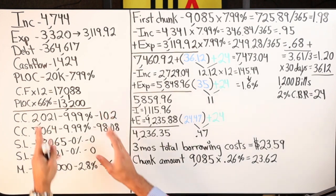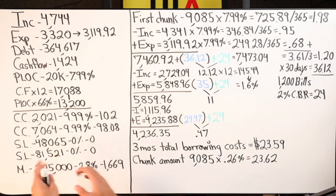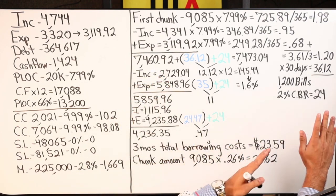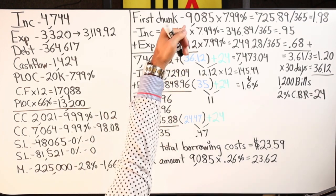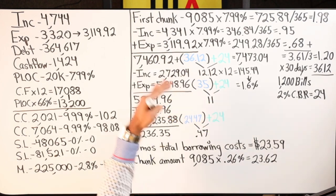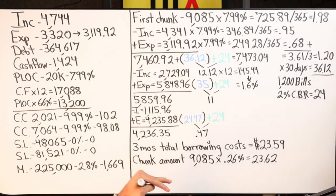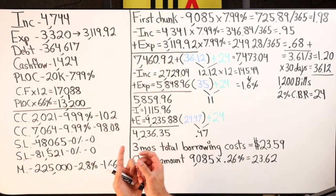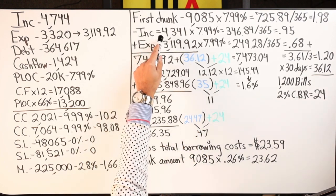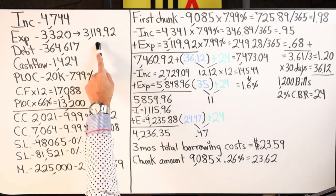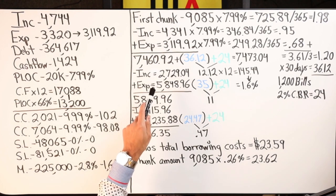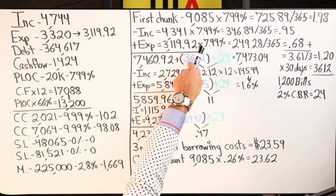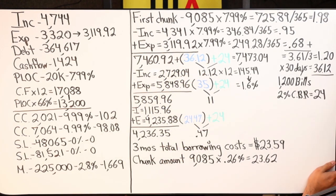Divide by three hundred sixty-five — ninety-five cents a day. When you're running your numbers, you're creating a column: one side has the four major numbers, all your expenses, debts, line of credit, and rules. The other column is your actual velocity banking tracking. To the side you're logging borrowing costs day to day. There are three important numbers each month: the initial chunk amount, the balance after income comes in, and the balance after expenses come out. Those three distinct numbers help you develop an average daily borrowing cost over a thirty-day period.